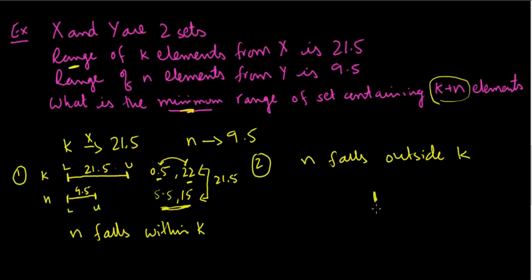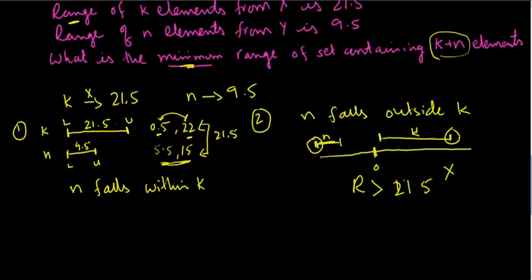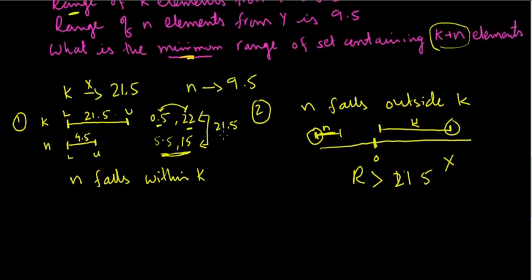So if I pick a number line, let's say this is my zero point. Maybe my K elements are here. And my N elements, they don't overlap at all and they are somewhere here. In this case, my range would be, I'll pick the lowest number, which would be this. So N plus K elements, the lowest would be here, the biggest would be here. And range would definitely be greater than the range of K, of K elements. So the range would definitely be greater than 21.5. So we can take this quantity out, because this is definitely greater than case one, where the range was 21.5.